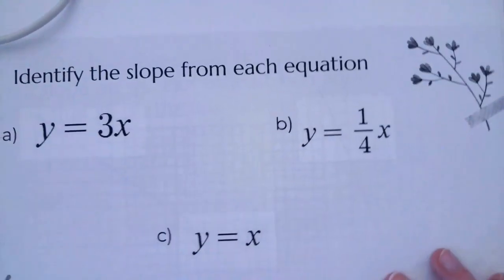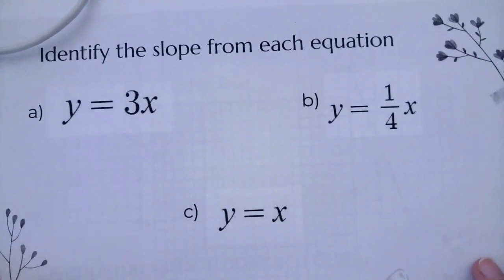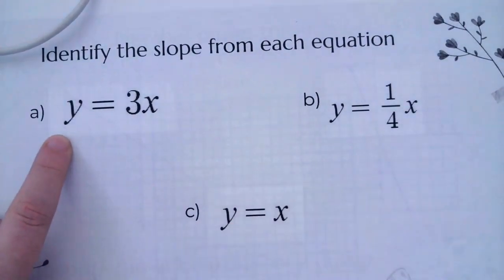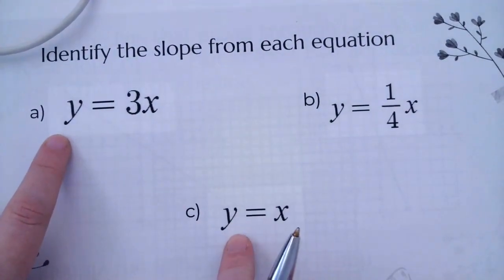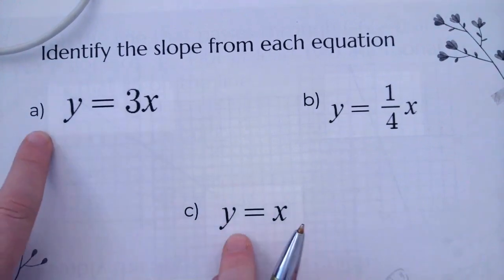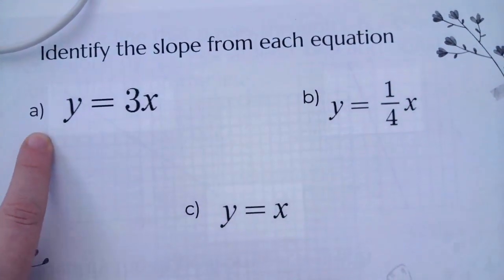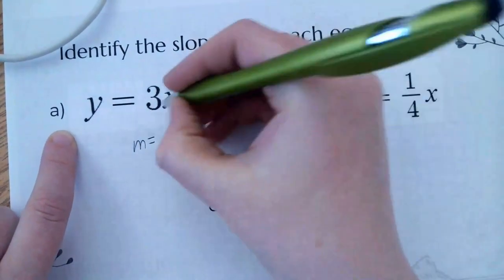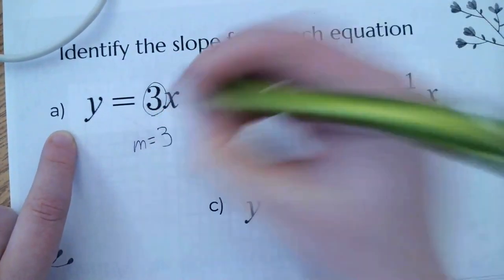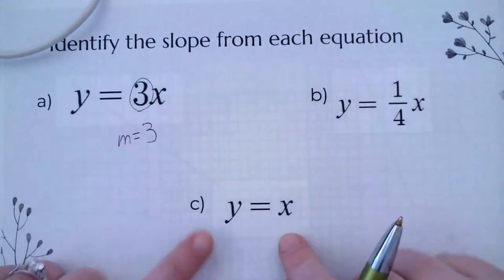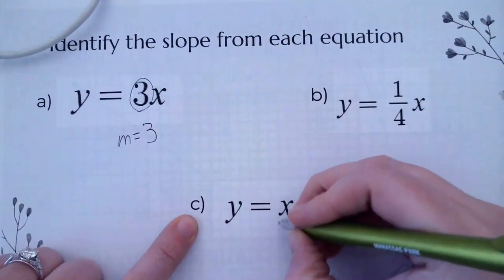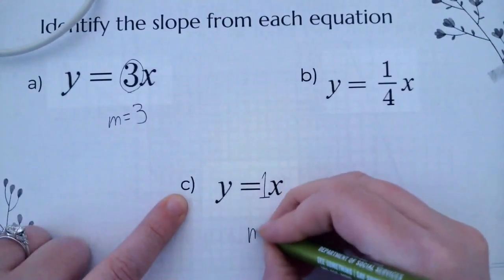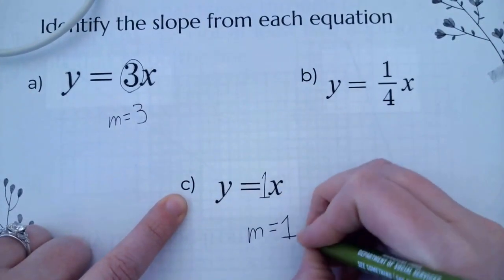The next examples only require you to tell me the slope of the equation. I'm going to do a and c, and you're going to do b by yourself. For equation a, m equals 3. For equation c, remember when there doesn't look like there's a number in front, it's actually a 1. So m equals 1.